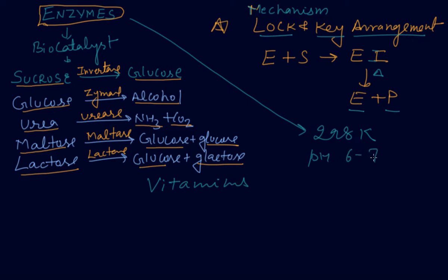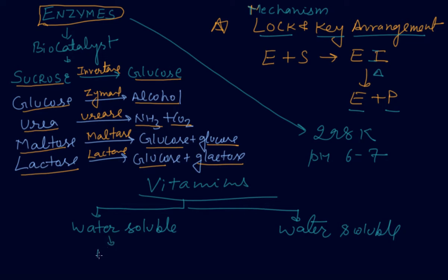Vitamins are required in very small amounts. Actually, vitamins are of two types: one is water-soluble and another is water-insoluble. The water-soluble vitamins are B and C, and water-insoluble vitamins are vitamin A, D, E, and K.